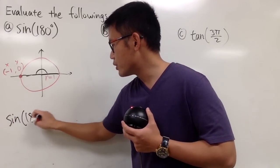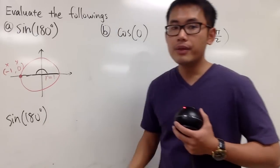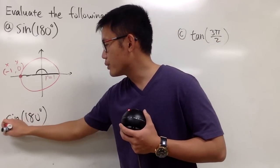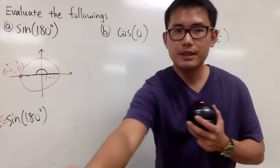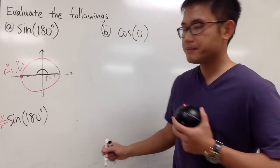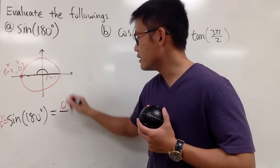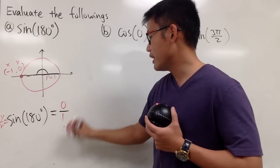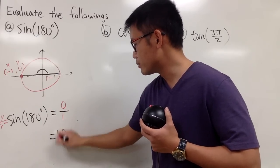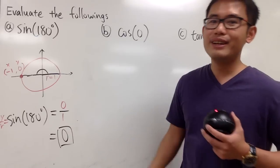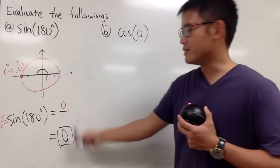So here we go, sine of 180 degrees. Recall that sine is equal to y over r, right? Sine is equal to y over r. y is 0, r is 1. So in the end, of course, 0 over 1 is just 0, and then we are done. Sine of 180 degrees is 0.